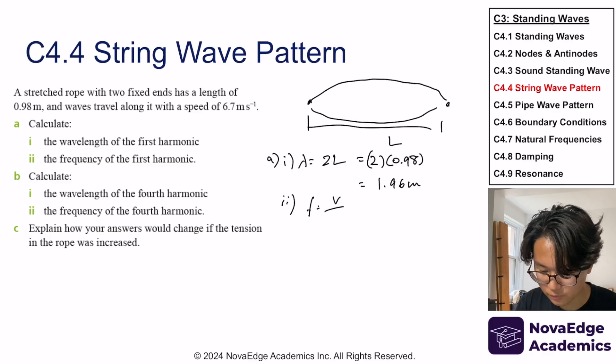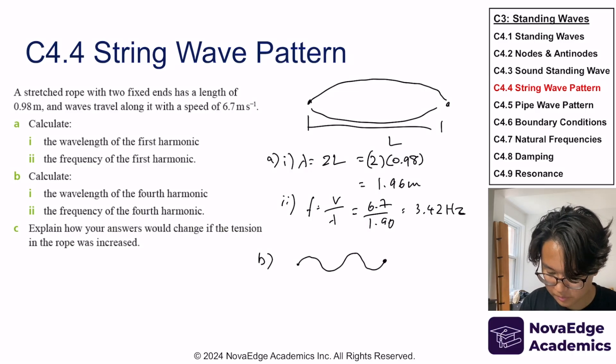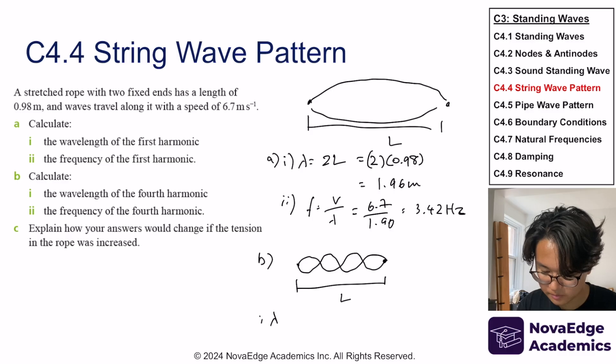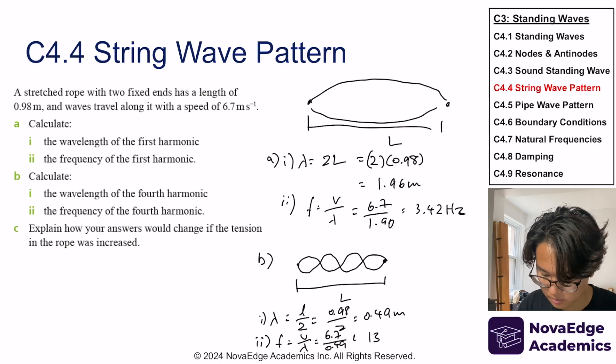Part two, frequency would be velocity over lambda. Pretty simple. How about part B? Now we want to do fourth harmonic, so let's draw it out. Fourth harmonic would be like that. That's length L. So wavelength is half of length L. And frequency, same concept.